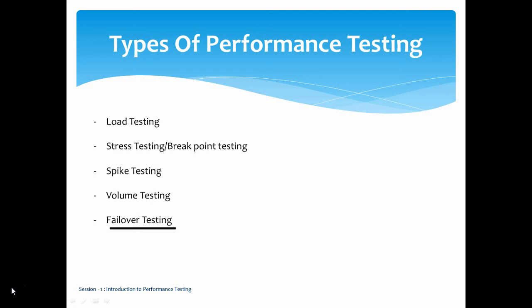The next type is failover testing. For example, if we have two data centers — one in the USA and another in the United Kingdom — we take down one data center, or within a single data center we take one system or node out, and we observe whether the remaining active systems can handle the load. This tests whether available nodes or data centers can manage the load, and what the impact is — whether performance degrades, users experience slowness, see errors like 'service not available,' and for how long those errors persist.